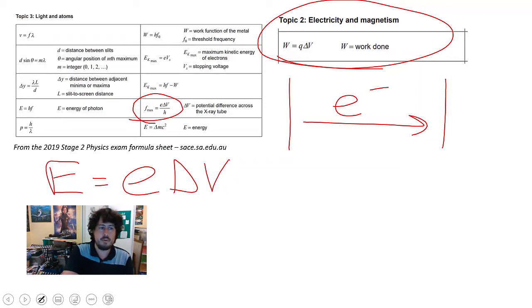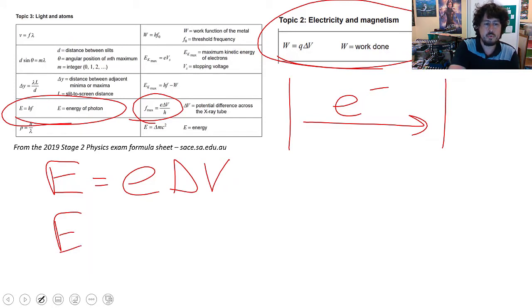The energy of a photon is this formula here. So E, again, will be measured in joules, is equal to Planck's constant times the frequency of the photon you're going to get out of it.